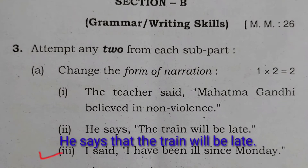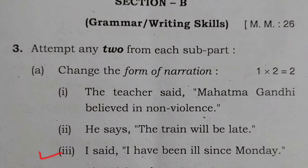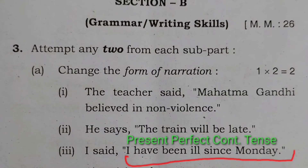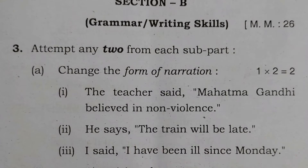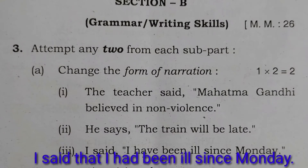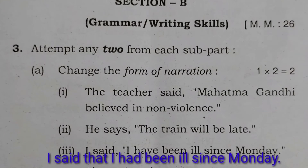Now the third sentence is: 'I said I have been ill since Monday.' Here is present perfect continuous tense in reported speech, so it will change into past perfect continuous tense in indirect speech. So the indirect speech will be: 'I said that I had been ill since Monday.'